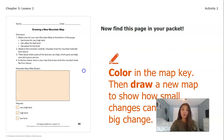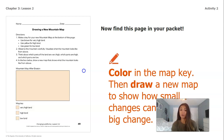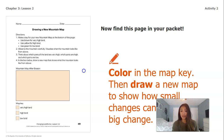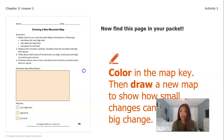You will notice that in your packet there is a second worksheet that looks very similar to the one that we filled out at the very beginning of this lesson. You're going to color in the map key the same colors as the first worksheet that you worked on, and then you are going to draw a new map to show how small changes can add up to a big change over time.